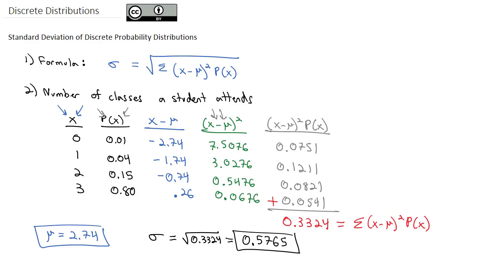So while the mean is 2.74, on average, the students attending 2.74 classes, the standard deviations around that mean are 0.5765 classes on either side. That's our standard deviation for a discrete probability distribution.